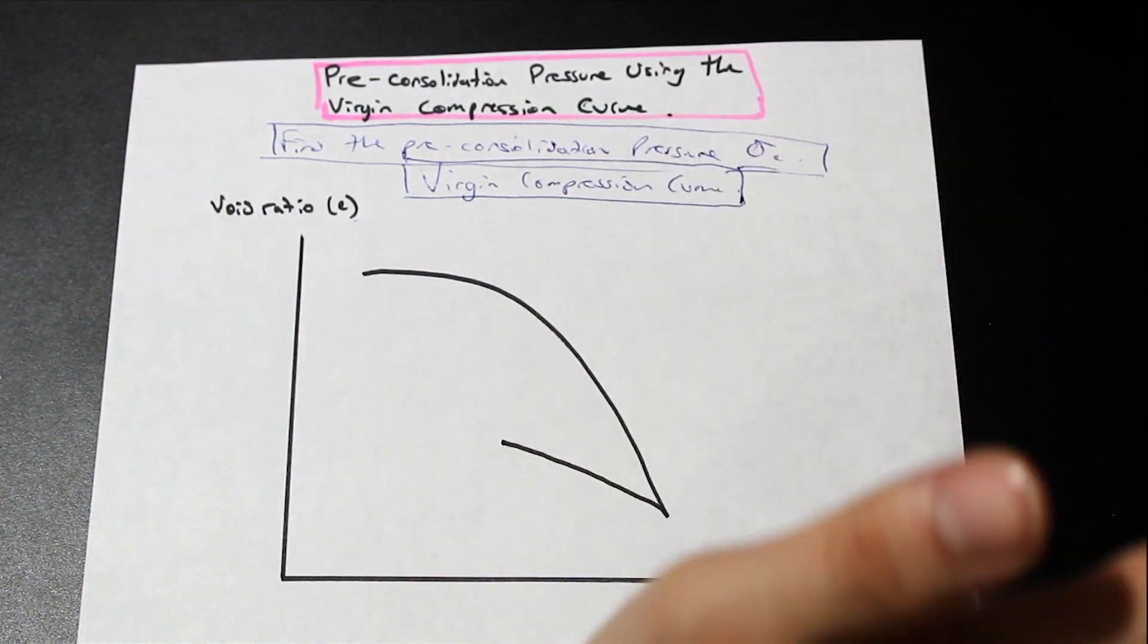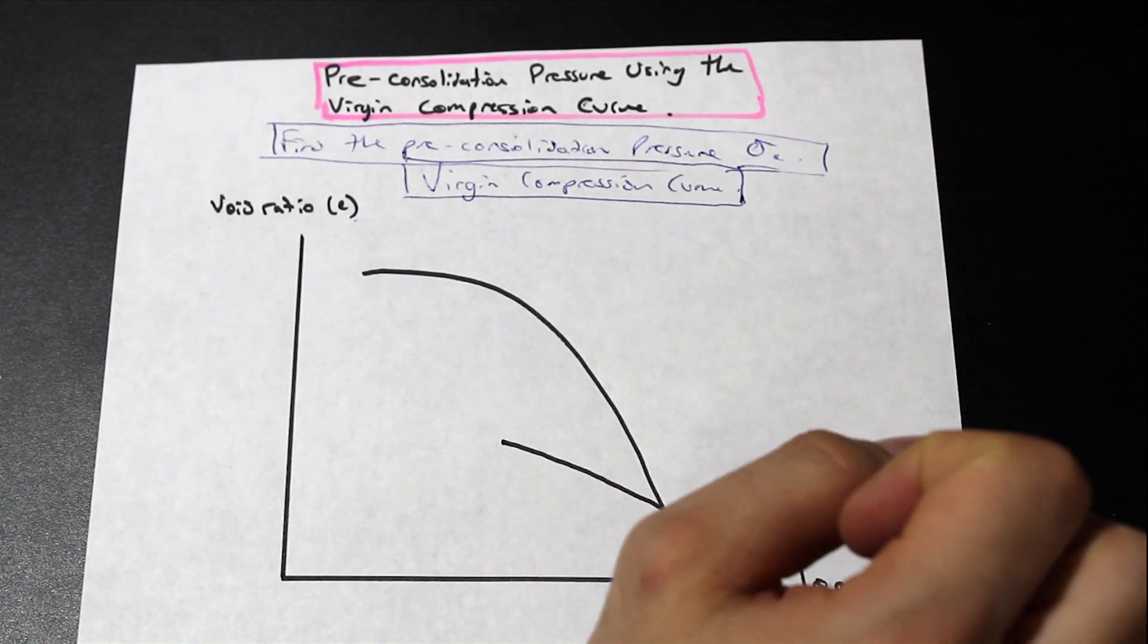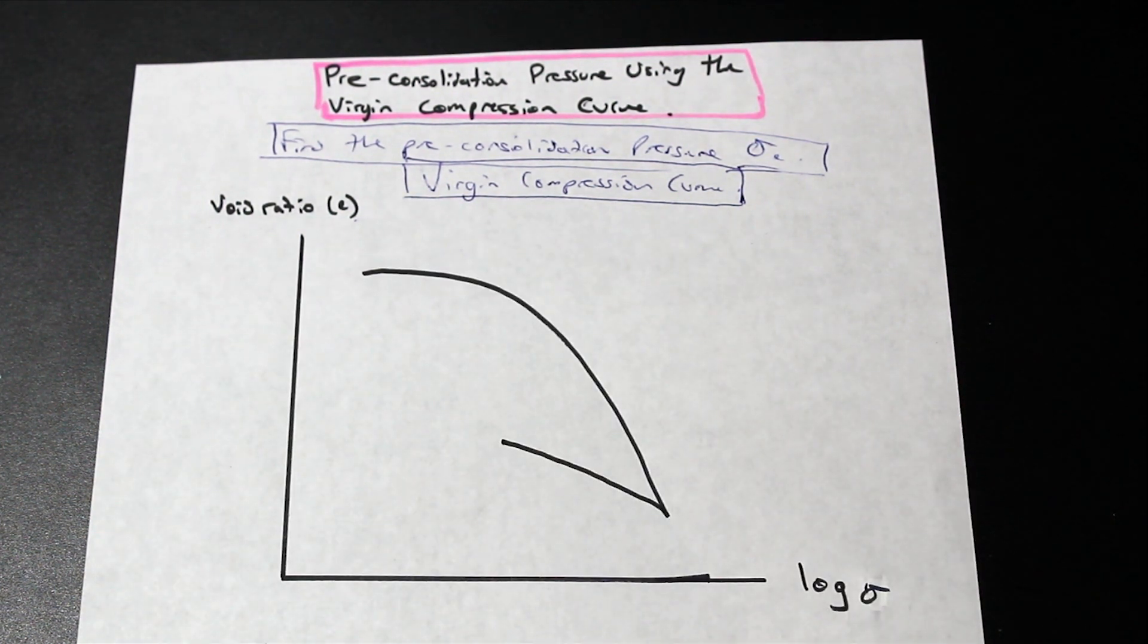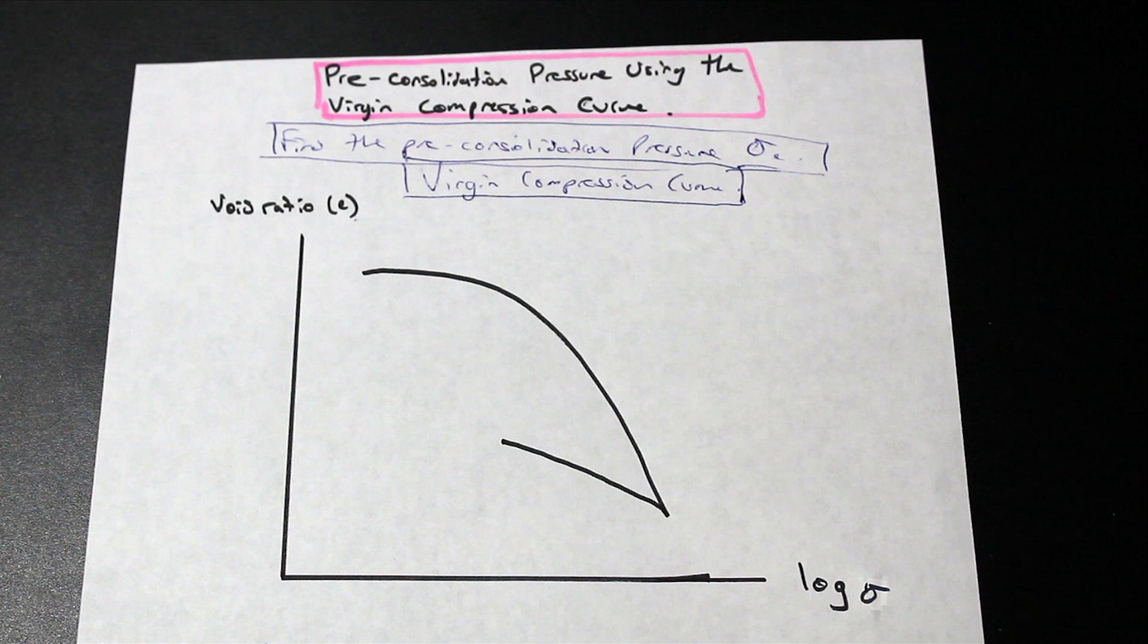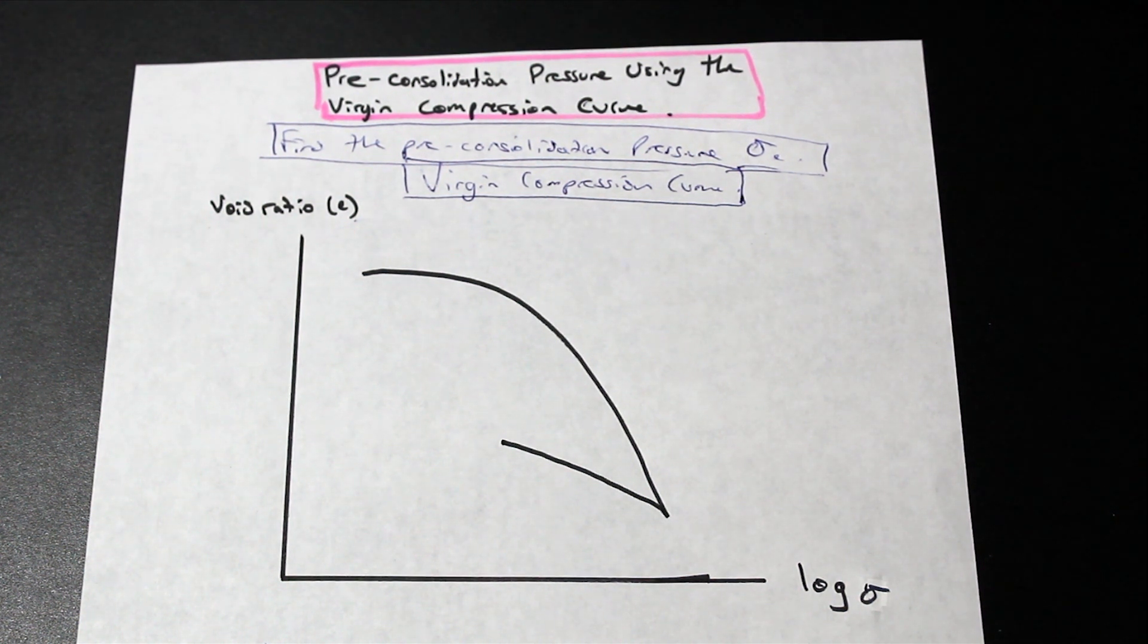So we're using sigma c here for the pre-consolidation pressure. But in some books it might be sigma p. Ask your professor, make sure. It's good before we start to have a slight understanding of what consolidation is.